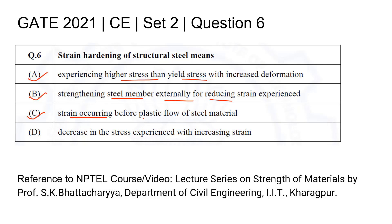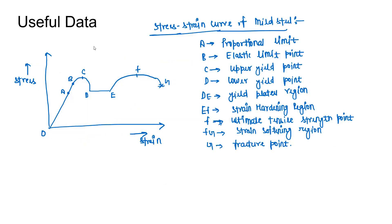Option C: Strain occurring before plastic flow of steel material. Option D: Decrease in the stress experienced with increasing strain. Reference to the relevant NPTEL courses and videos has been cited.